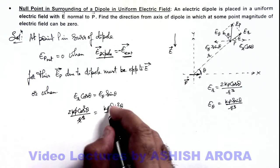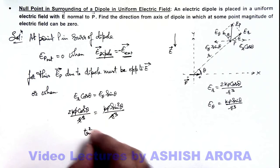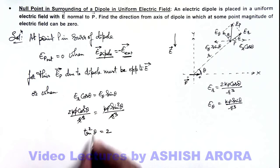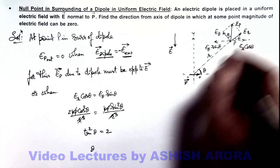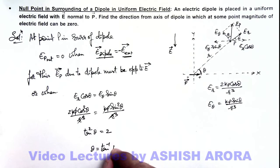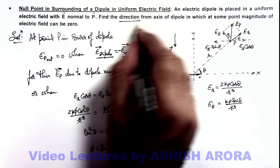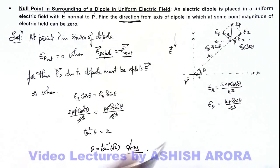Here, kp/r³ cancels out, giving us tan²θ equals 2, or we can write the value of theta — the direction in which the null point can be located — as theta equals tan⁻¹(√2). That is the answer to this problem: the direction from the axis of the dipole at which the electric field can be zero at some points.